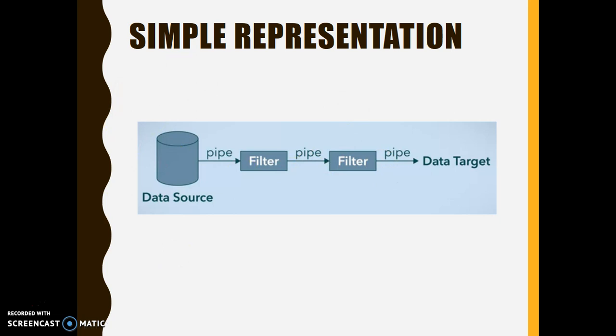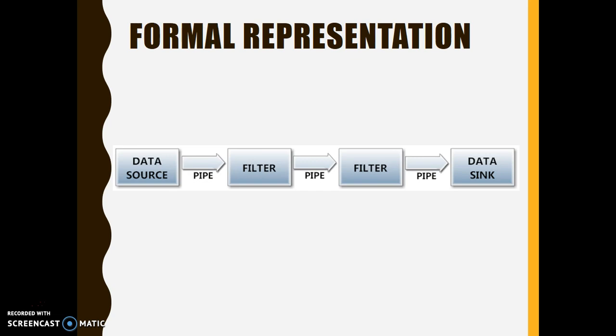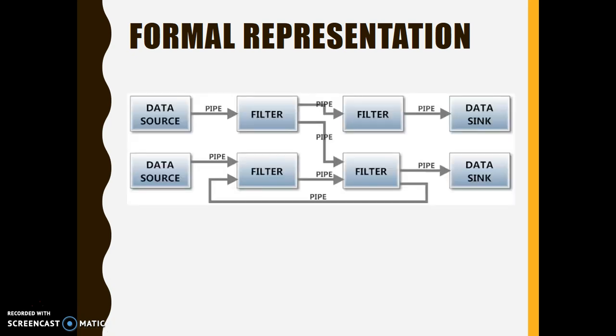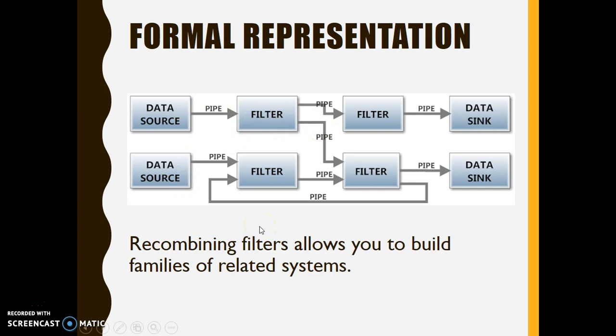Some more representations would look something like this. Here we still have our data source, we have the different filters, we have pipes which connect the filters, and then we have the data sink. Another representation would look something like this. With this, it simply means that filters can be combined, and by recombining filters it allows you to build families of related systems. It means that filters can be used by different systems, provided that it processes the data in the same way.